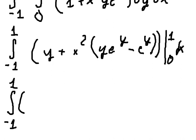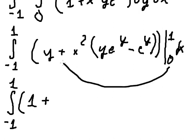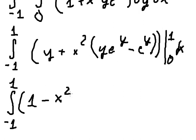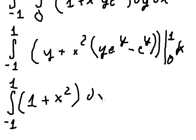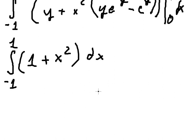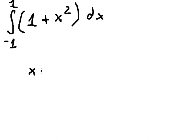We put number one in here — e to the power of one minus e to the power of one — they cancel. Now we put number zero in here: y is zero, e to the power of zero equals one, so we get negative one. With the negative sign outside, we have positive one. So we got the final value for this integral.